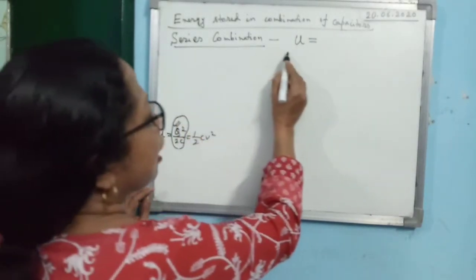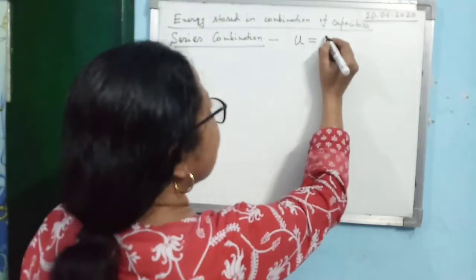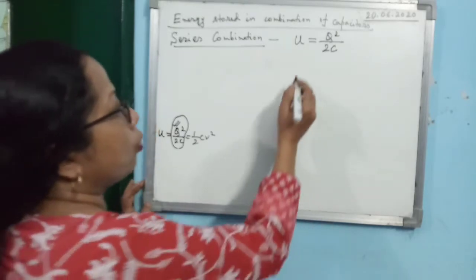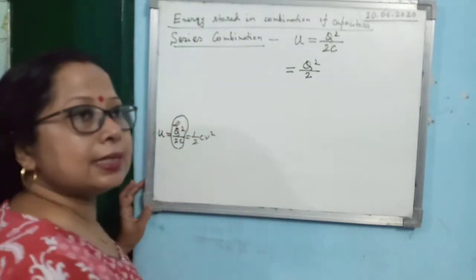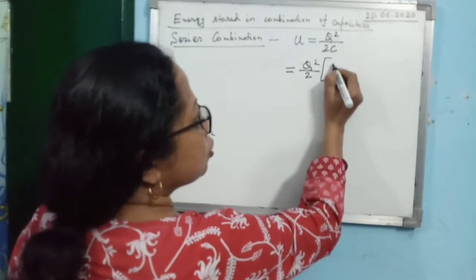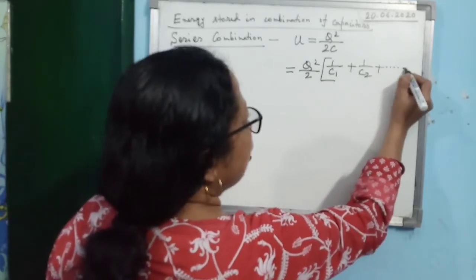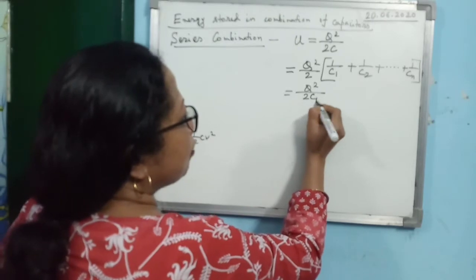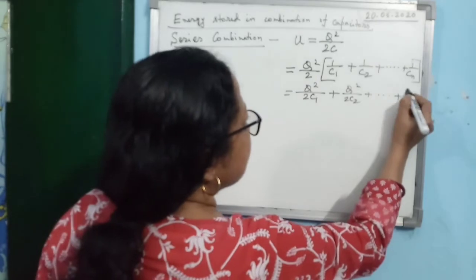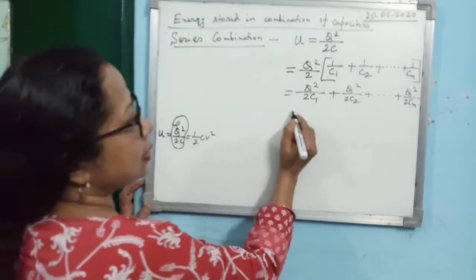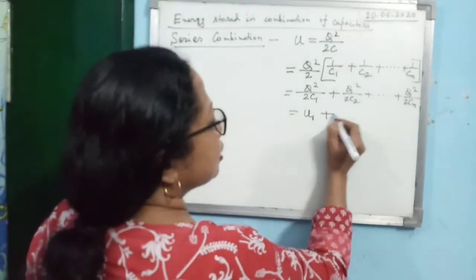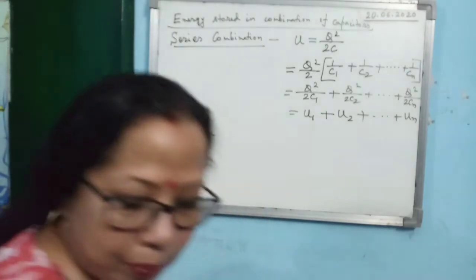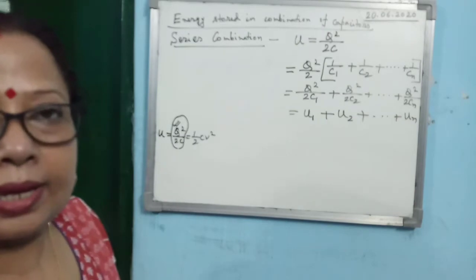For series combination, the total energy stored is q²/2C, where C is the equivalent capacitance. For capacitors in series, 1/C equals 1/C1 + 1/C2, and so on for n capacitors. So you can separate the terms: q²/2C1 + q²/2C2, and the last term q²/2Cn. Now q²/2C1 is the energy U1 of the first capacitor, q²/2C2 is U2, and so on. So the energy stored in the combination is the sum of the energy stored in each capacitor.